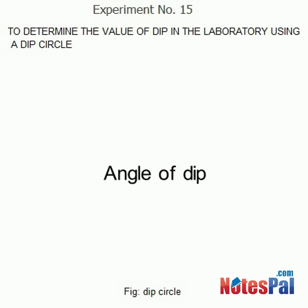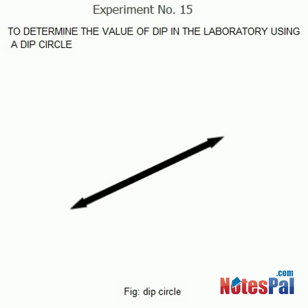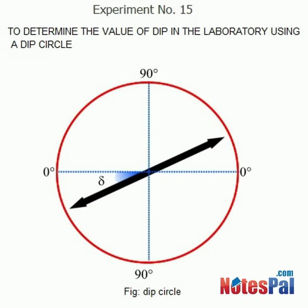Angle of Dip. When a magnet is suspended freely, it makes an angle with the horizontal plane. The angle is called the angle of dip. It is the angle made by the horizontal component of Earth's magnetic field with the total field.